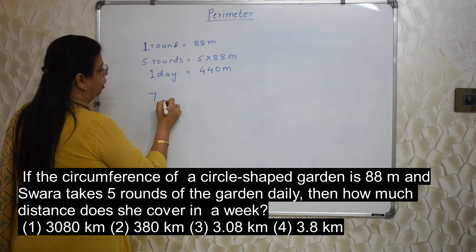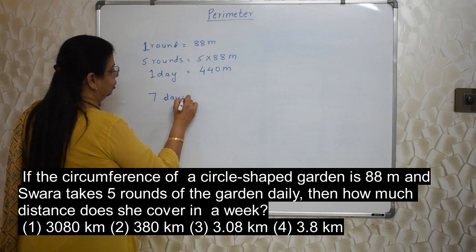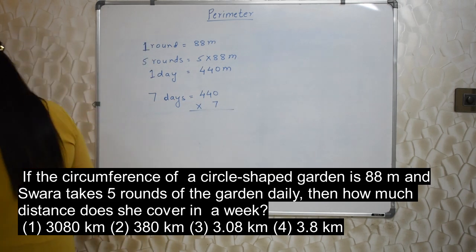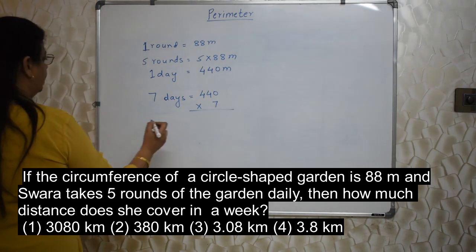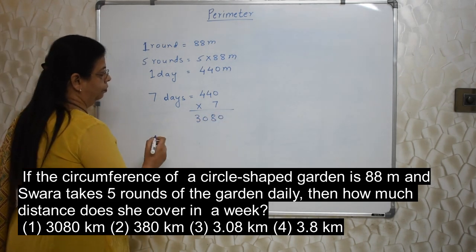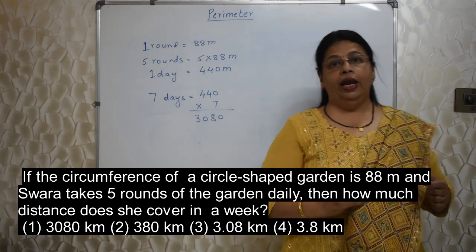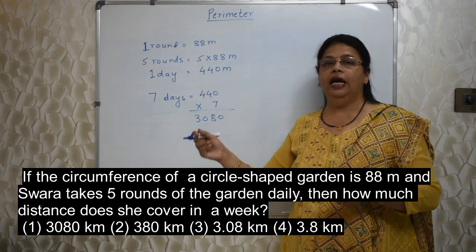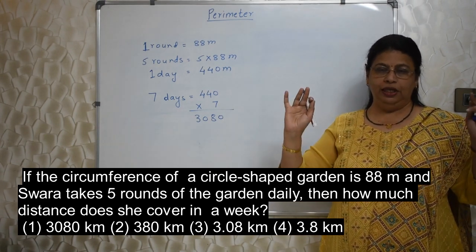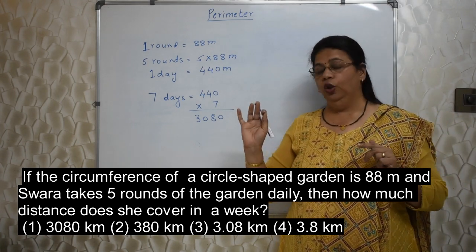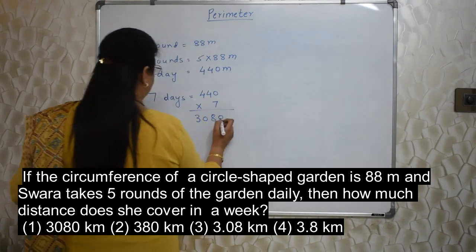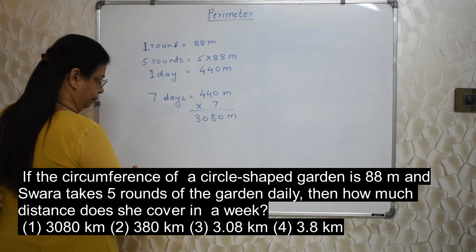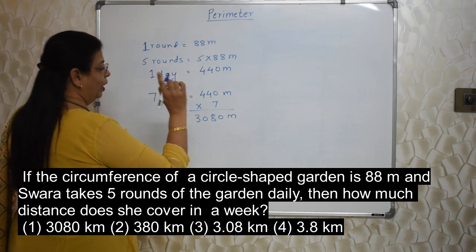They are telling us to find out how much distance will she cover in a week. Week has 7 days. This is for 1 day, 5 rounds in 1 day. So this is for 1 day. Now they are telling us to find out for 1 week, means 7 days. So again we need to multiply this 440 by 7. So how much is the distance covered? Is 3080.